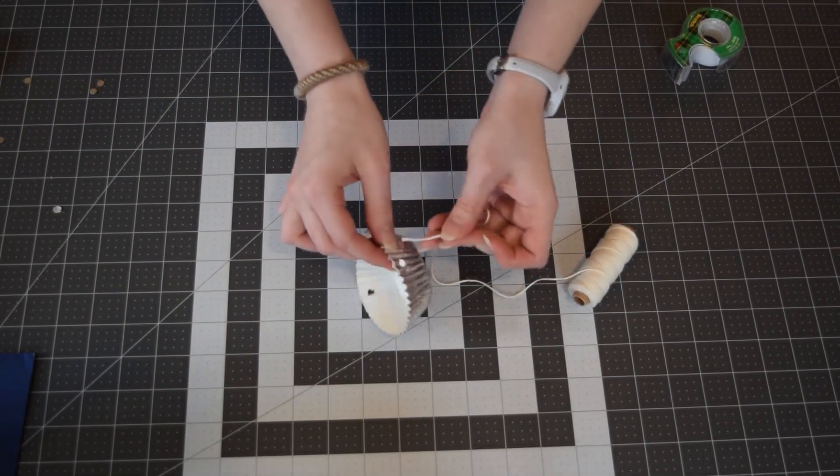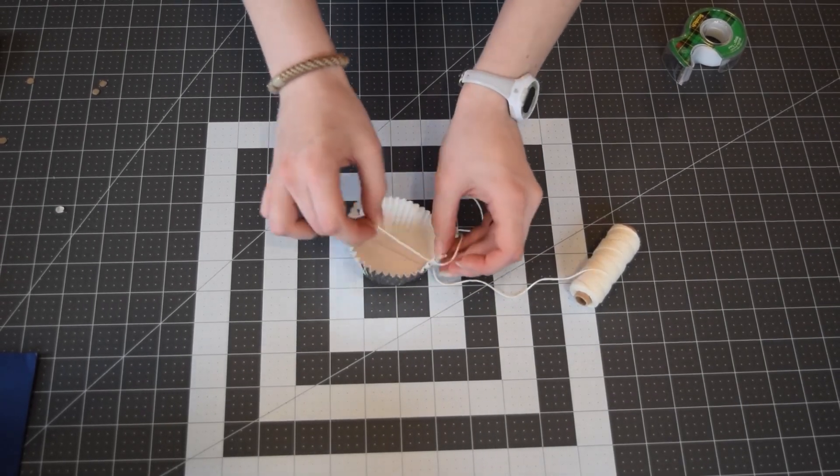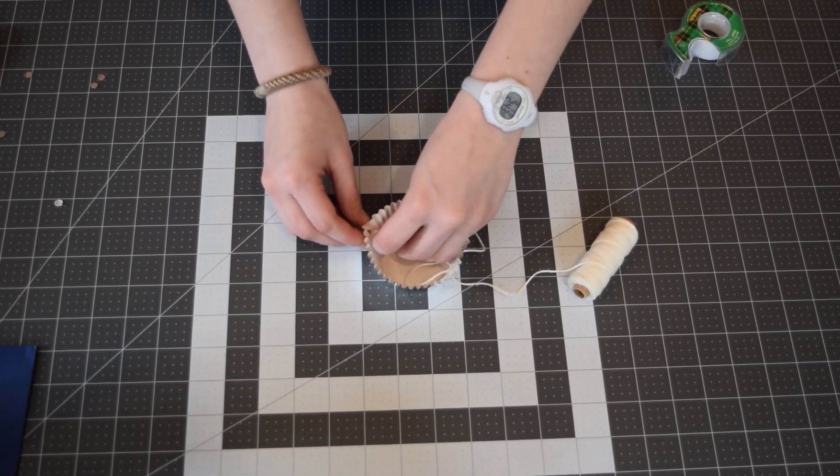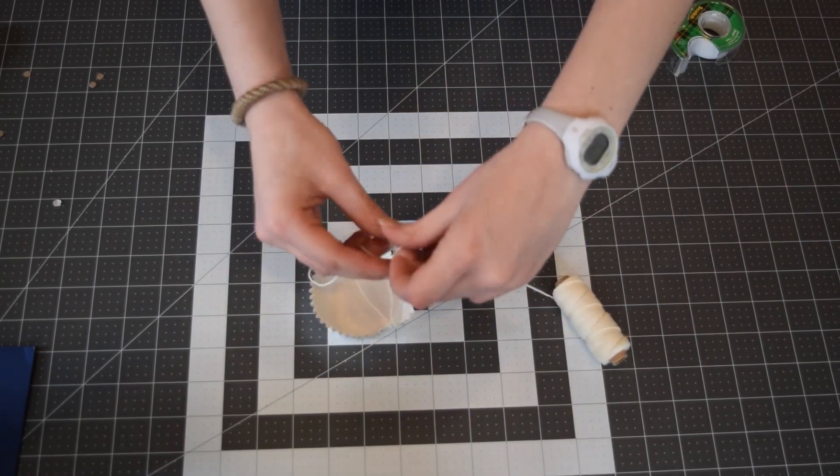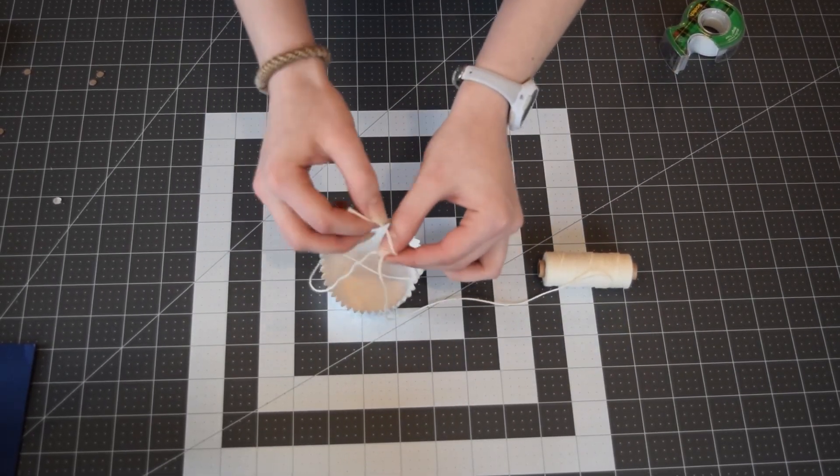Then, you're going to thread your string through the holes and tie it to itself, creating a sort of triangle shape.